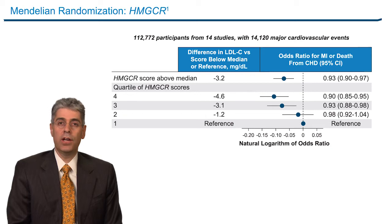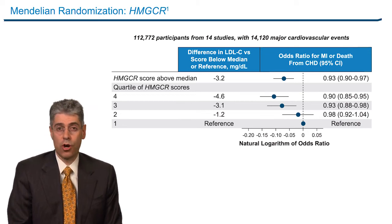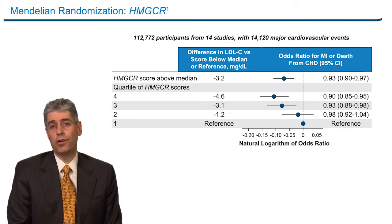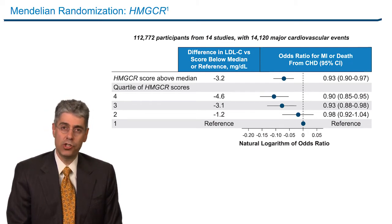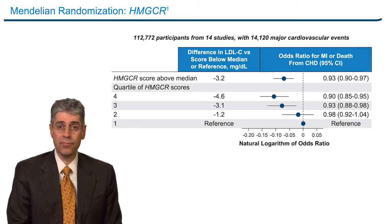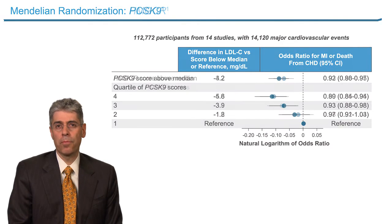Recently, we've had additional genetic data that are very reassuring. This is work that I participated in, that Brian Ferentz led, looking at Mendelian randomization. We looked at variants that affected LDL cholesterol in two genes: one in HMG-CoA reductase — the target for statins — and one in PCSK9. In over 100,000 patients from over 14 studies with over 14,000 major cardiovascular events, we saw that individuals with a greater burden of variants in the HMG-CoA reductase gene leading to lower LDL cholesterol had a lower risk of cardiovascular disease. And that's exactly what we would expect — like being on increasing doses of a statin.